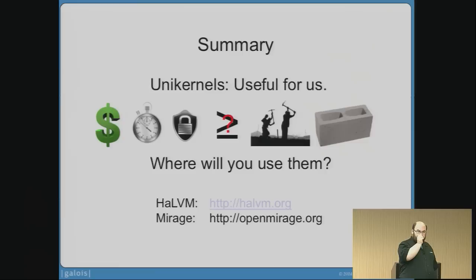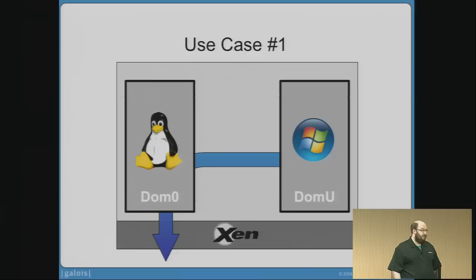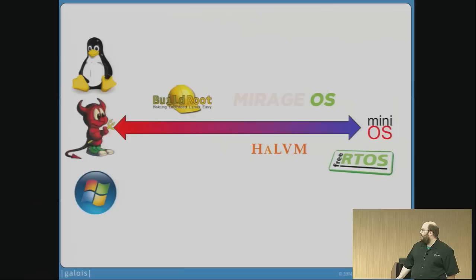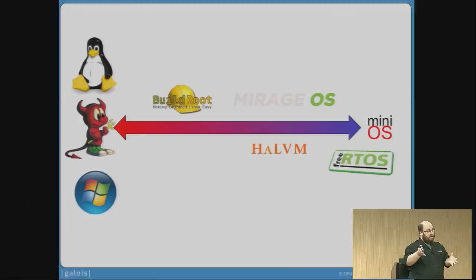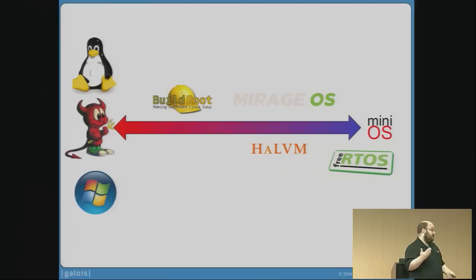On Docker: I think of it as another thing that fits in the middle of the continuum from full-blown operating systems to MiniOS. I don't think it's like Mirage or the HalVM because Docker is more tuned towards taking existing programs and some infrastructure around them and putting them in a container. So I think of it as slightly more heavyweight than a unikernel solution — an interesting midpoint that's popped up in the middle time.